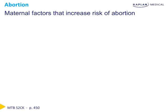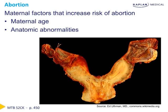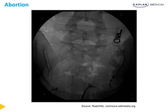There are several maternal factors that can increase the risk for abortion. The first, and most important, is advancing maternal age, which increases the risk of chromosomal abnormalities. Next are anatomic abnormalities, including uterine anomalies such as uterine didelphys. Another maternal risk factor includes exposure to diethylstilbestrol, which results in a T-shaped uterus seen on hysterosalpingogram.